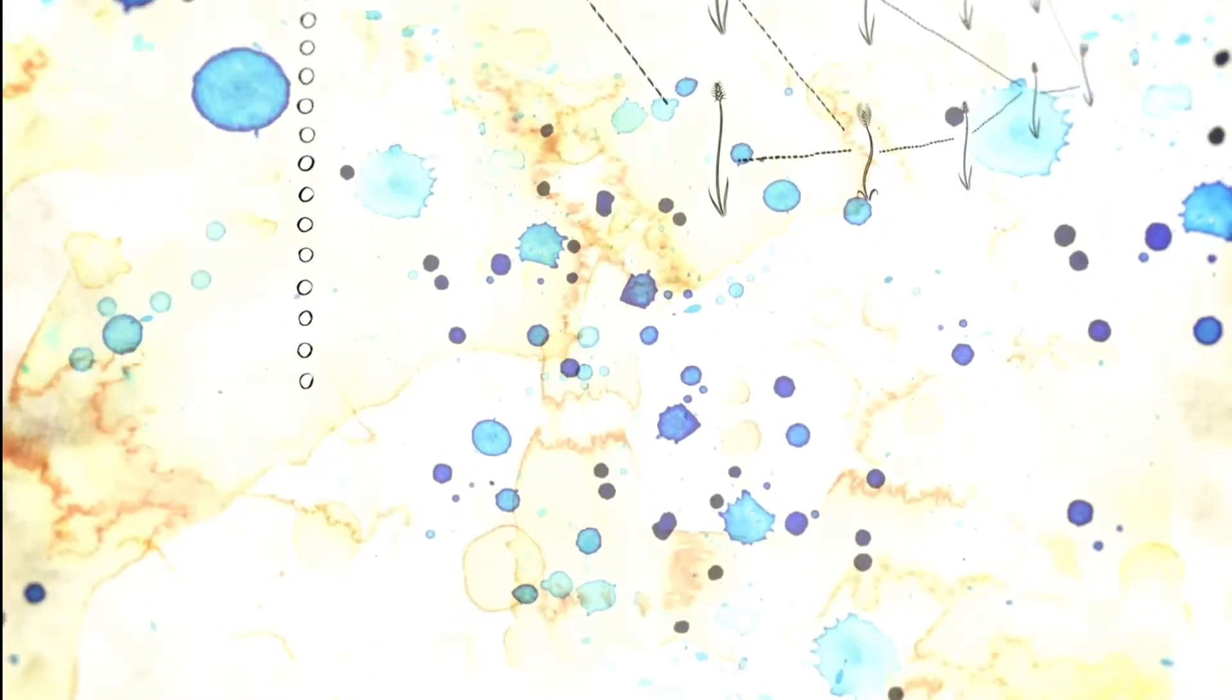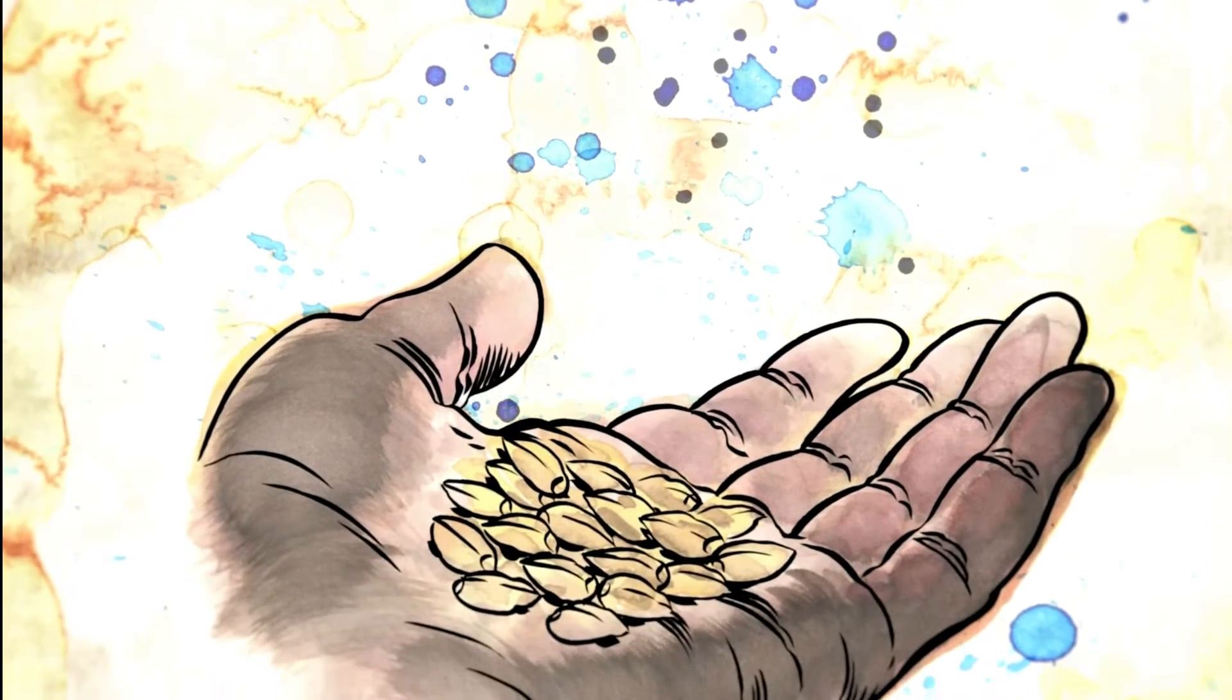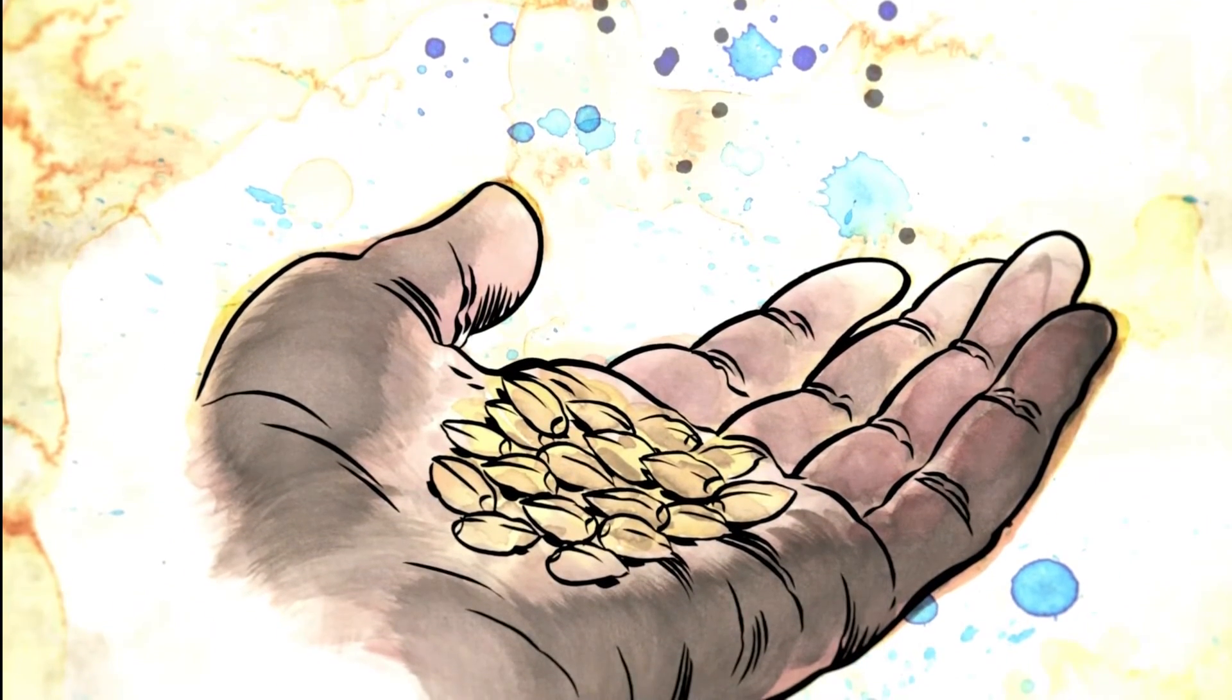Our ancestors simply saved the seeds of the plants with desired traits for planting the next year, but the process of selectively adapting wild plants, also known as domestication, was quite slow.